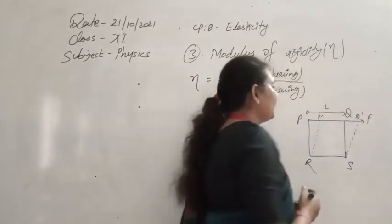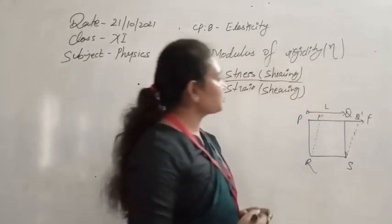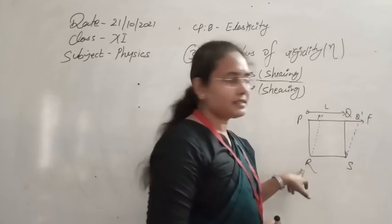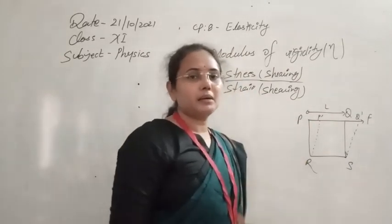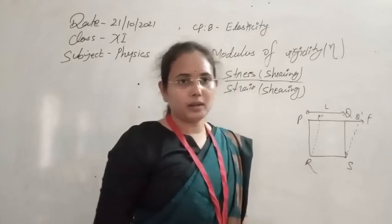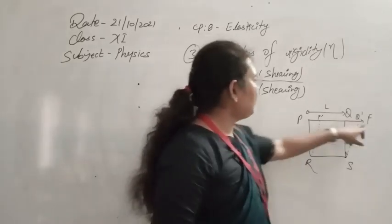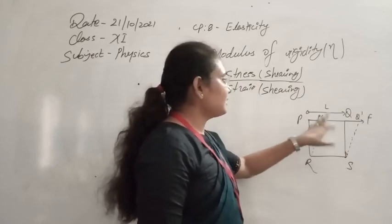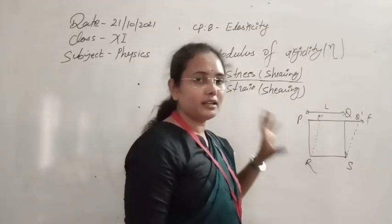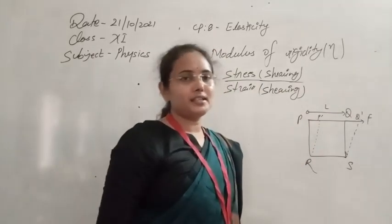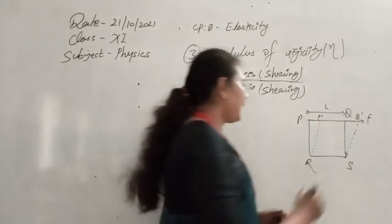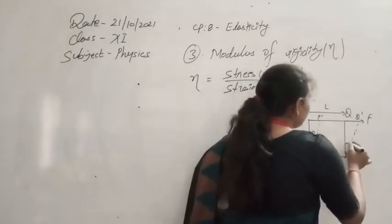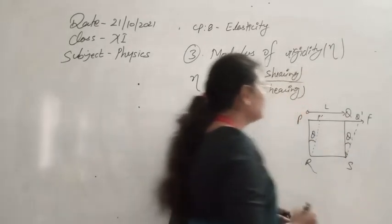Due to this distortion, point Q shifts to Q', and the new shape of the square body becomes P Q' R' S. So the square becomes a parallelogram. We have seen that due to the effect of tangential force, a strain is created that changes the shape of the body.